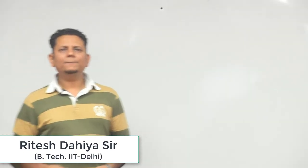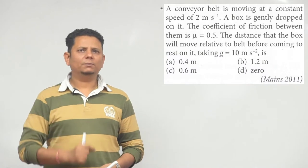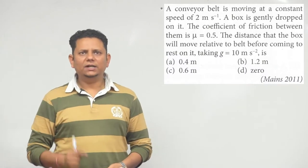Next question, 2011 ka sawal hai. The question says a conveyor belt is moving at a constant speed of 2 meter per second. A box is gently dropped on it.